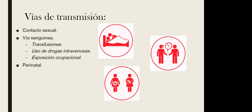Las vías de transmisión son: primero, el contacto sexual. En la década de los 80 e inicios de los 90 se consideraba como el 'cáncer gay' porque era más común en personas homosexuales. Sin embargo, actualmente se ha demostrado que en realidad es el contacto sexual riesgoso y las prácticas sexuales sin protección lo que puede provocar esta enfermedad.